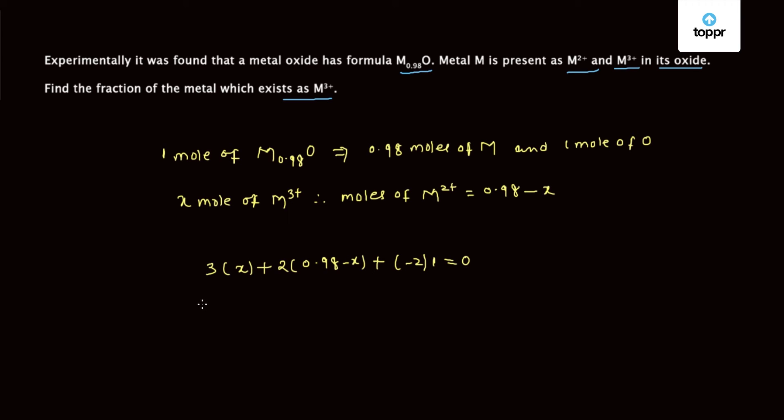Solving this we get 3x plus 2 times 0.98 minus 2x minus 2 equals 0. This gives x equals 2 times (1 minus 0.98), which equals 0.04.